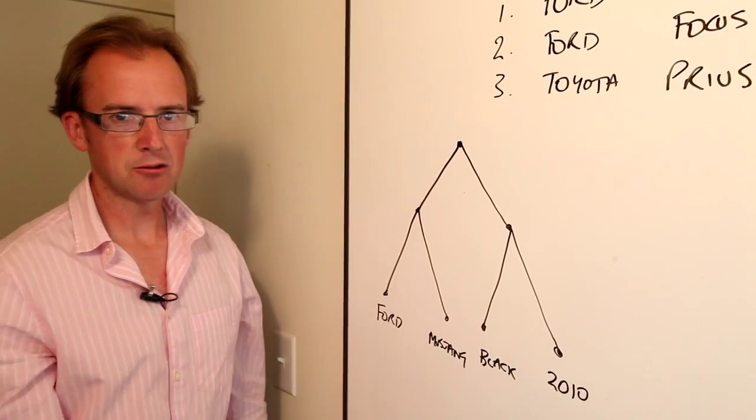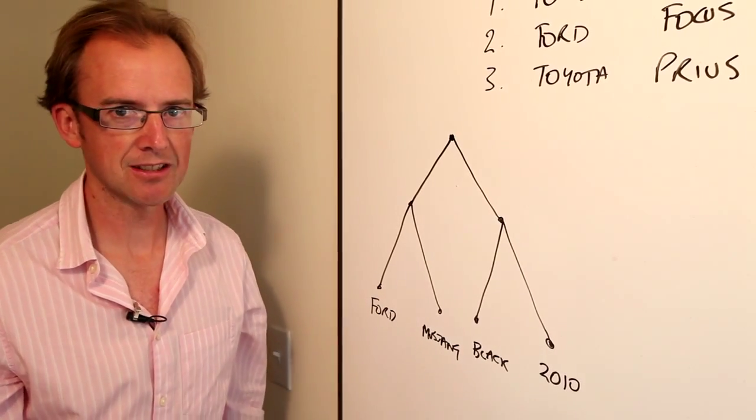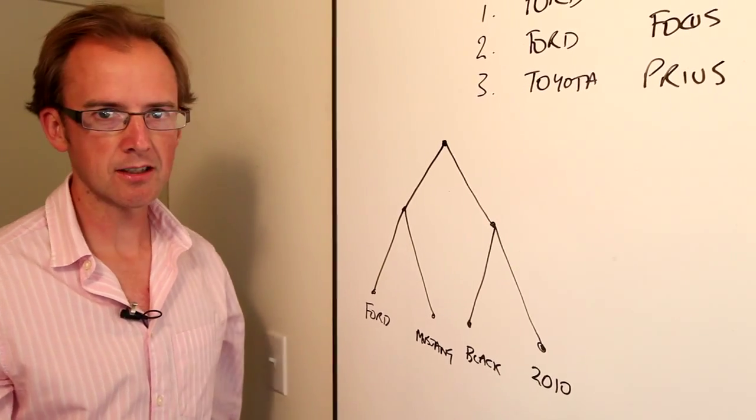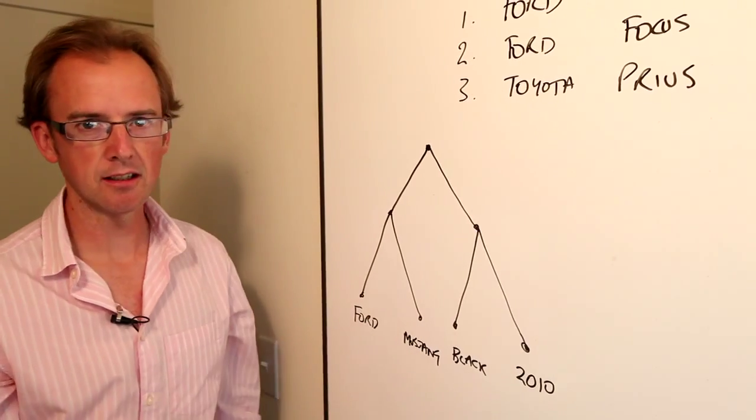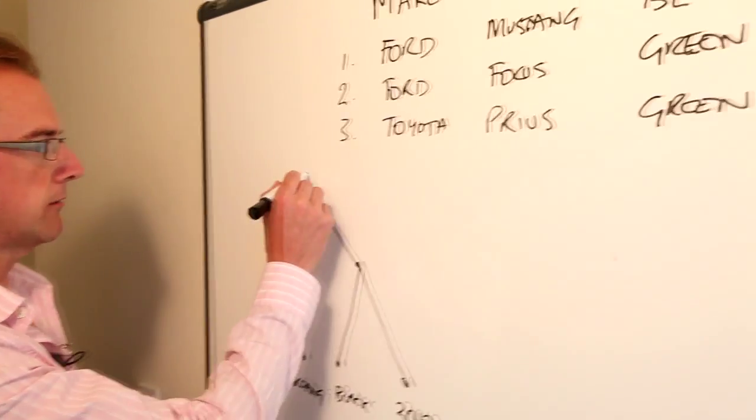Now at the moment, all we've done is introduce a whole bunch of overhead into the way we represent a record, which doesn't give us anything. Where it starts to get interesting is if we start to consider how another record relates to this first record. So that's record number one.